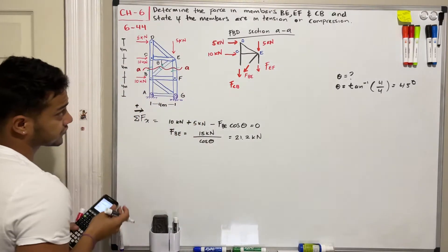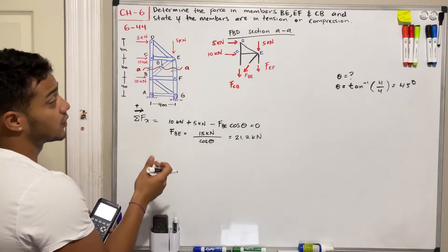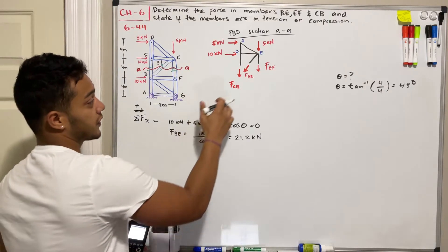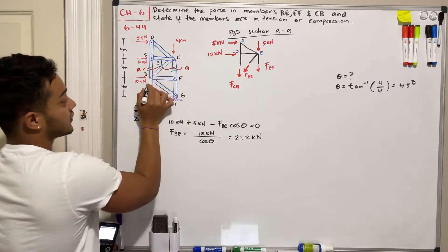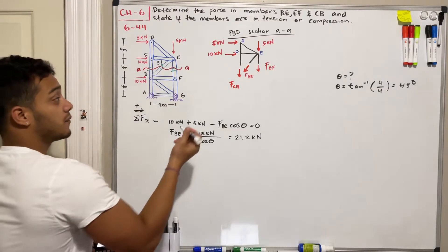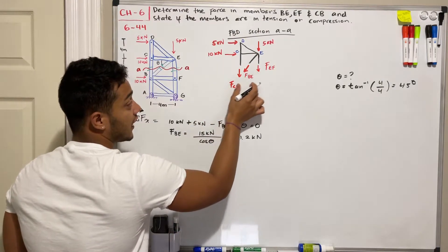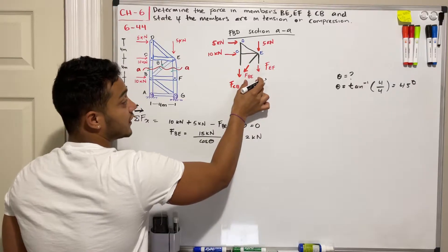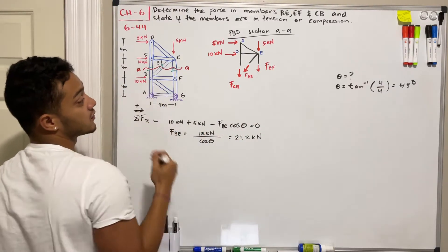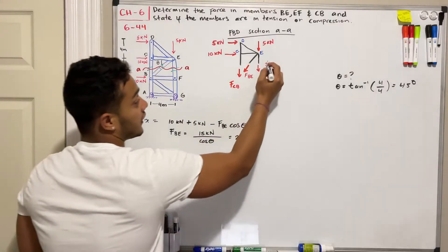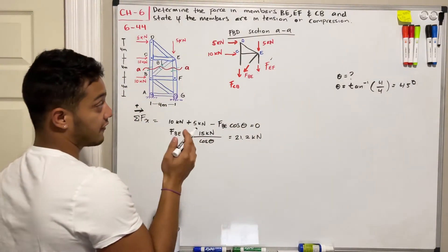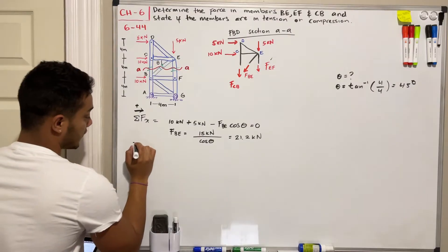Next, I'll apply the sum of moments about point B. I choose point B because it cancels both FCV and FBE from the equation since those forces have zero moment arm about B, allowing us to solve directly for FEF.